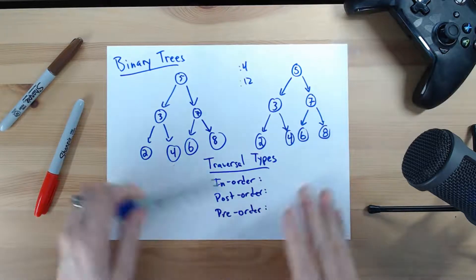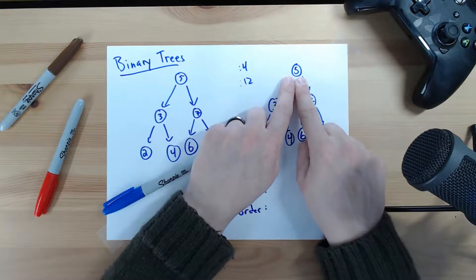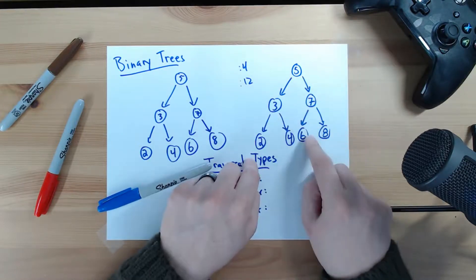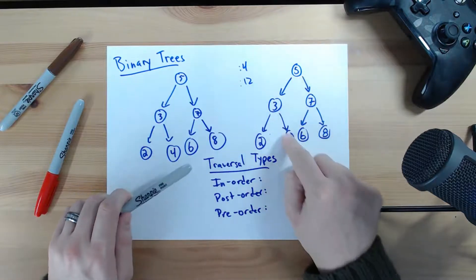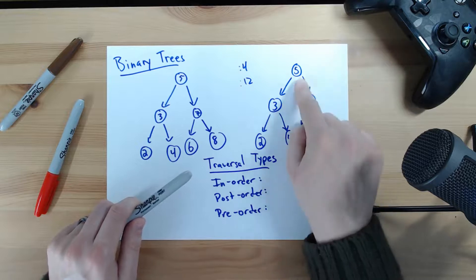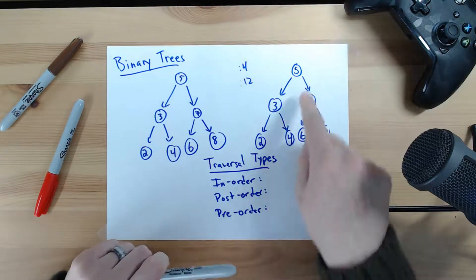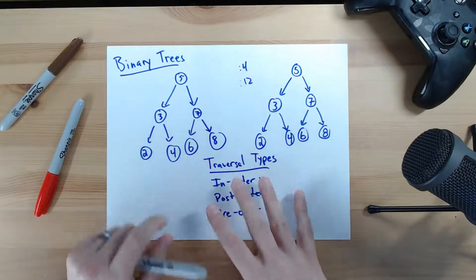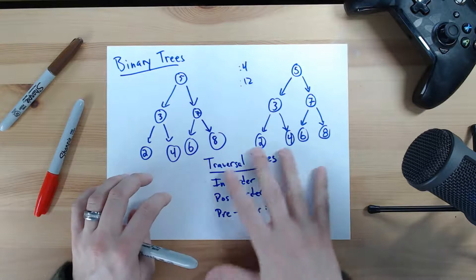Traversal through a tree like this — we typically start with our root node, and then we can traverse down to the left or to the right side to explore through this tree, just like you were searching for a piece of data. These traversal types are ways of exploring all of the nodes within a tree in various orders.